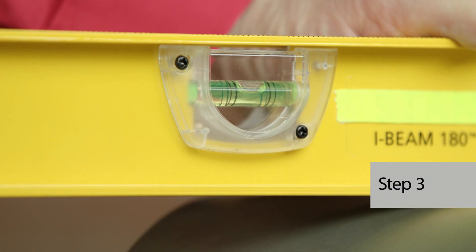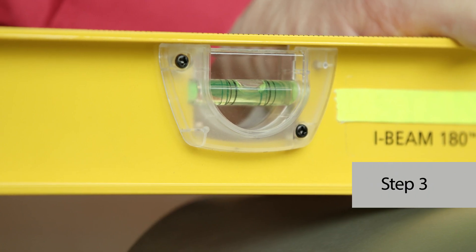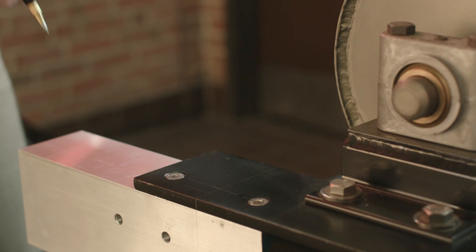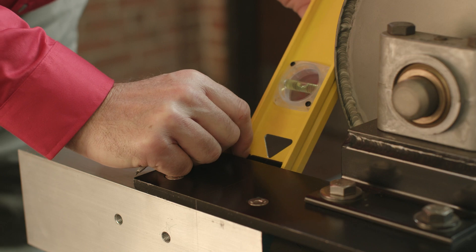Step three, using a level, lay out the horizontal tangent to the roll and then the vertical tangent to the roll.